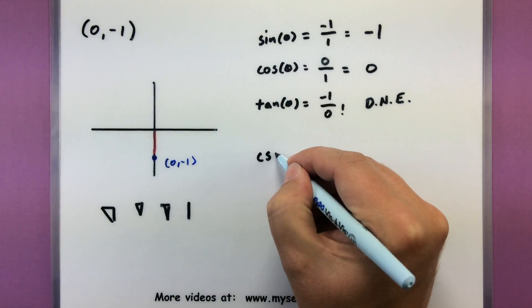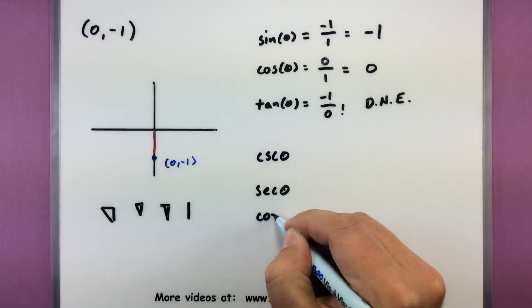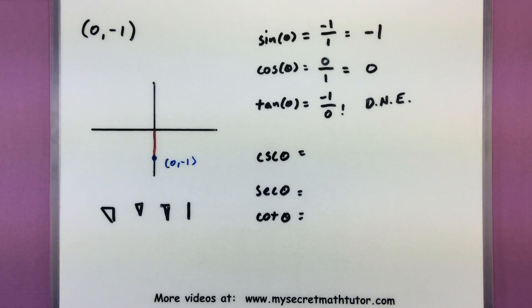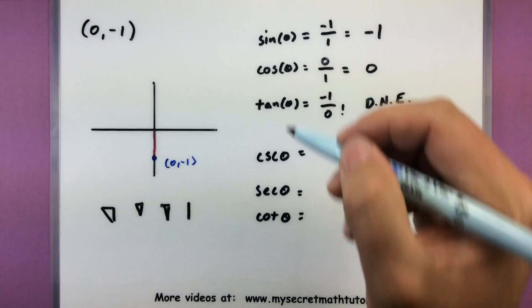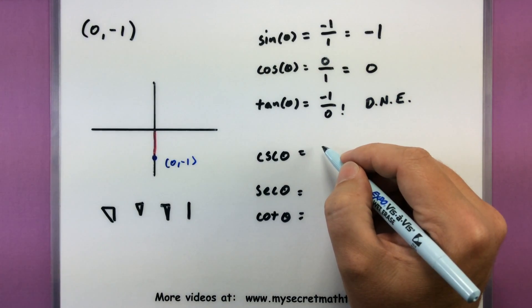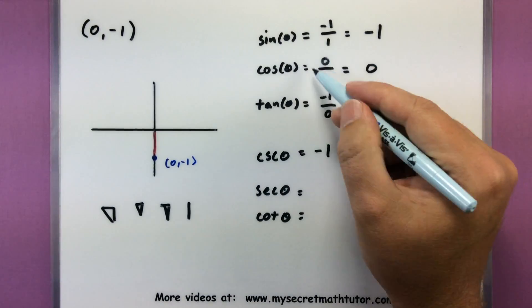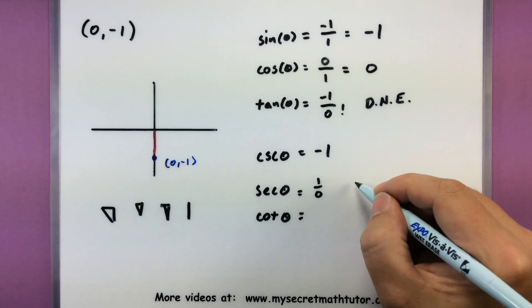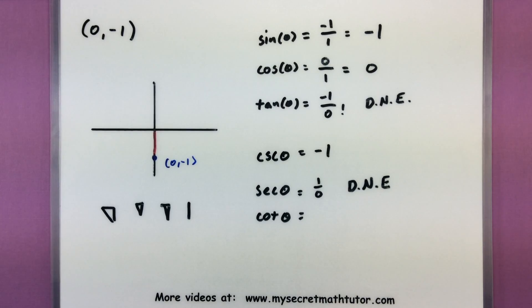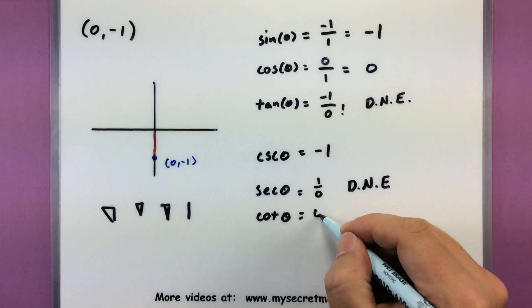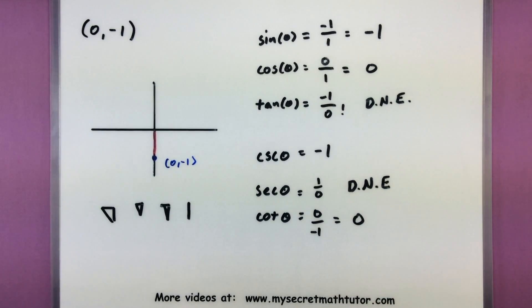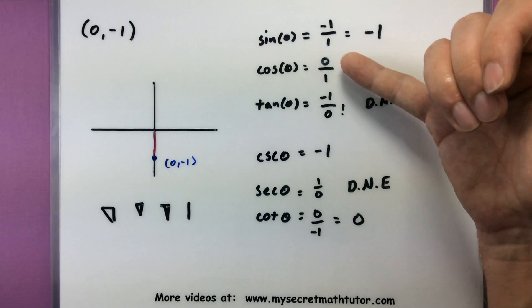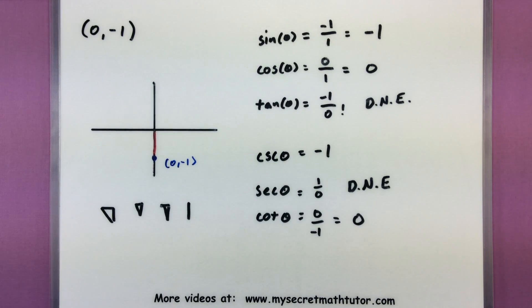We still have three more trigonometric functions. Cosecant, secant, and cotangent — some we can flip over, some we can't. Cosecant: flipping negative one over one gives still negative one. Secant: flipping cosine would put zero in the denominator, so secant does not exist. Cotangent: flipping tangent gives zero divided by negative one, which is simply zero. Watch out for special cases like this where you don't get a right triangle — just be careful where that zero ends up so you know which values exist and which don't. If you'd like to see more videos, please visit MySecretMathTutor.com.